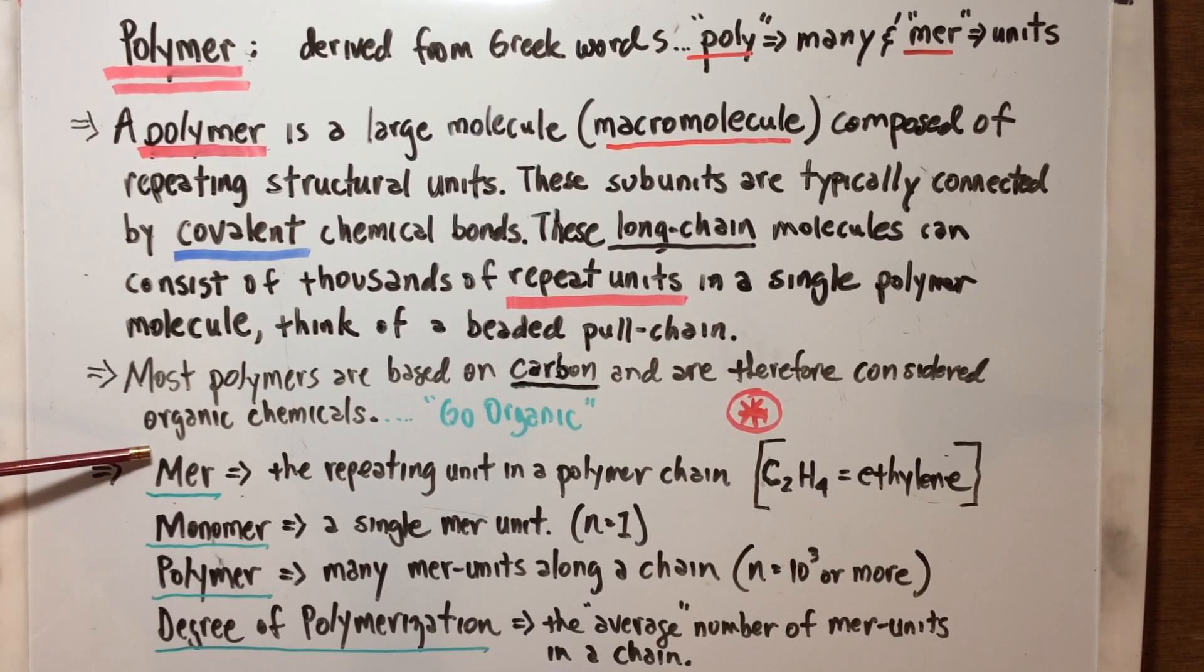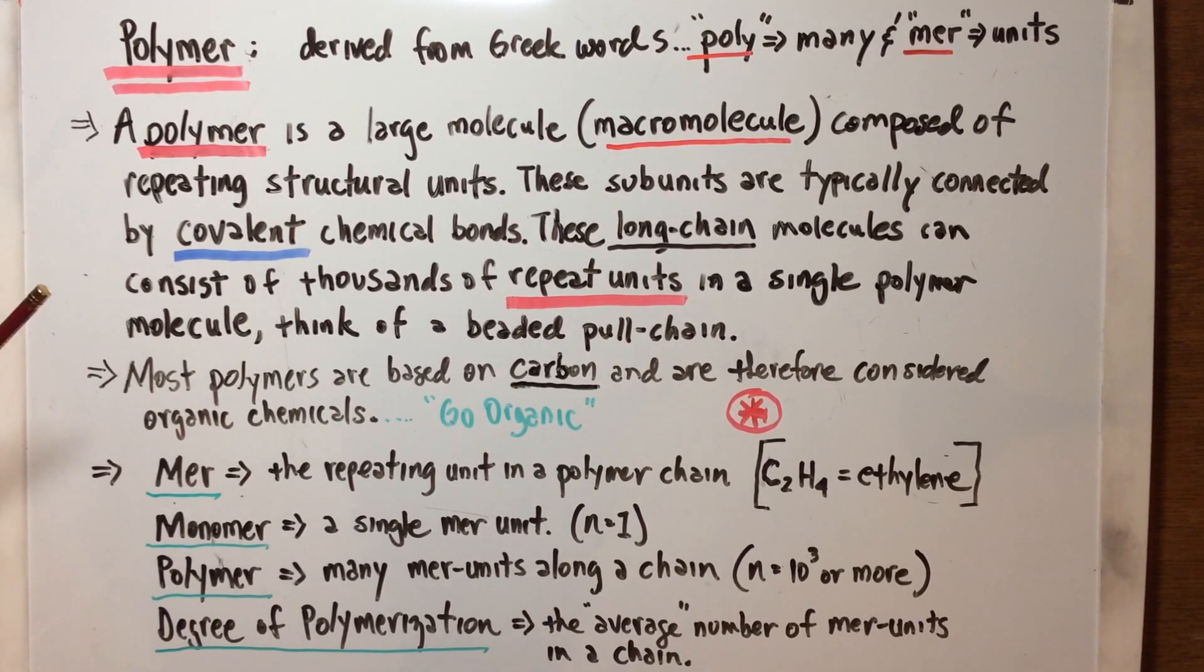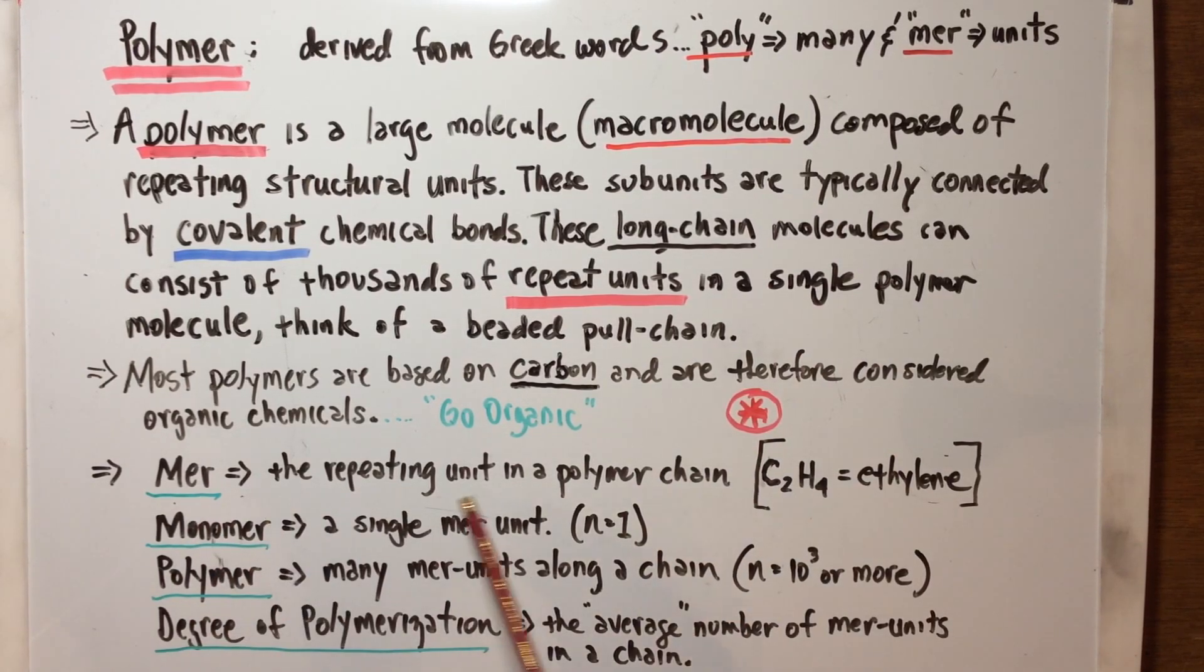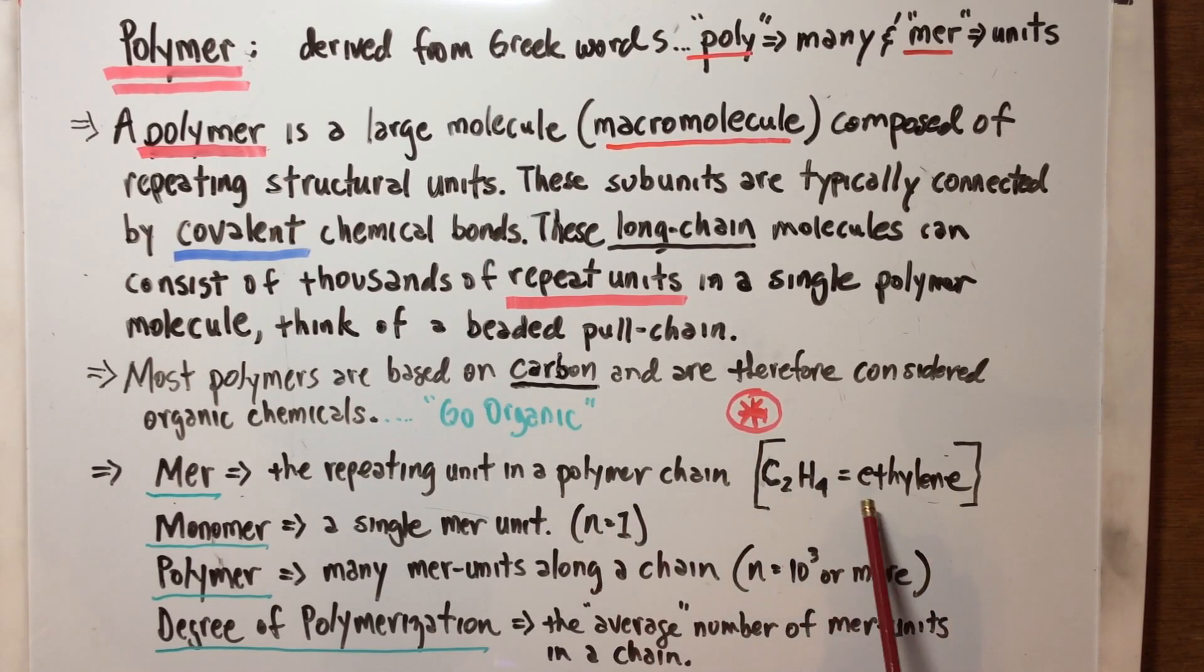Let's talk about the details. Mer - these are the components you'll need to understand when we're developing all of this because we're going to talk about the chemical structure of polymers, then look into some other aspects: crystallinity, the polymerization process, types and structures. Mer, as we set up here, is the repeating unit in a polymer chain. It's not a single element necessarily. I've given you an example here: C2H4, that is probably the most prevalent of all these mers. It is what we call the ethylene mer, the repeating unit.